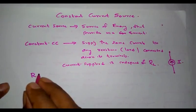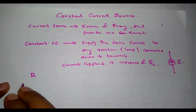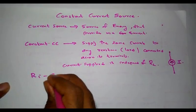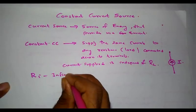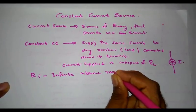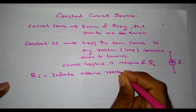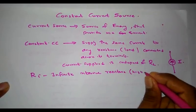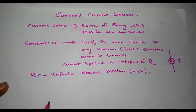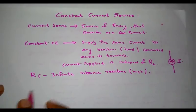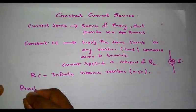A constant current source is considered to have an infinite internal resistance, which is usually very high. The output current of such a source will remain unchanged from zero load to an infinite load.